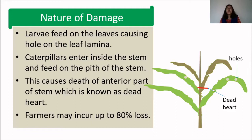Nature of damage: Jawar stem borer is a pest of the Jawar plant and destroys the leaves, stem, and the plant as a whole. The larvae feed on the leaves, causing holes in the leaf lamina. Caterpillars enter inside the stem and feed on the pith. Having mandibulate mouthparts, they are voracious feeders and destroy the plant very fast. This causes the anterior part of the plant to wilt and dry — that portion is called the dead heart. Farmers can incur a loss of up to 80%. Here in this diagrammatic representation, you can see the dead heart where the anterior portion of the plant has wilted and dried up.